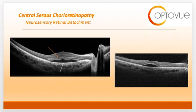The borders of the detachment may be regular, as seen on the right-hand scan, or irregular, as seen on the left-hand scan. It is important to remember that with CSR, the leakage occurs above the RPE. This will be important when we discuss differentiating CSR from other entities.